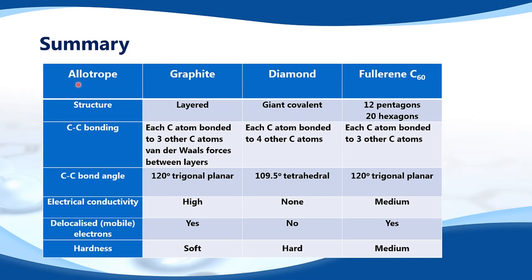Here is a summary of the three allotropes — graphite, diamond, and fullerene C60. In terms of structure: graphite has a layered structure, diamond has a giant covalent structure, and fullerene has a structure of 12 pentagons and 20 hexagons. For bonding: in graphite, each carbon is bonded to three others with Van der Waals forces between layers; in diamond, each carbon is bonded to four others; and in fullerene C60, each carbon is bonded to three others. Bond angles: 120 degrees trigonal planar for graphite, 109.5 degrees tetrahedral for diamond, and 120 degrees trigonal planar for fullerene C60.